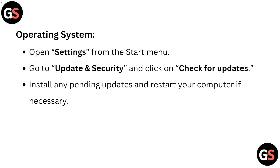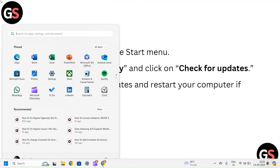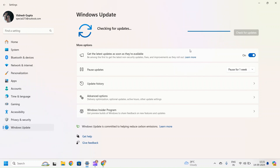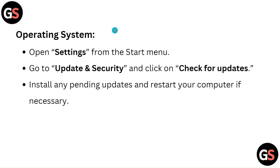For the operating system, open Settings from the Start menu. Go to Update & Security and click on Check for updates. Install any pending updates and restart your computer if necessary.